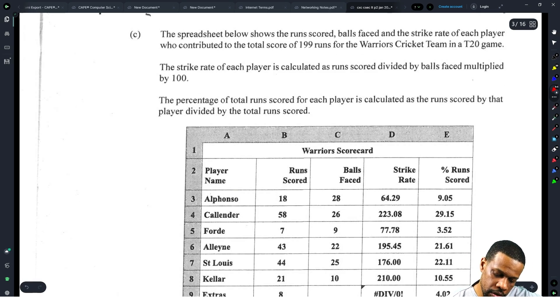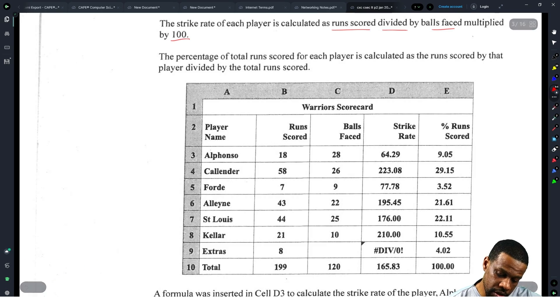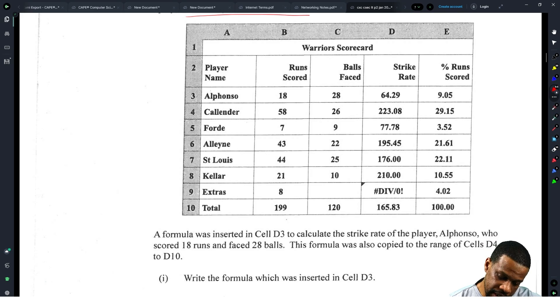Part C: The spreadsheet below shows the runs scored, balls faced, and the strike rate of each player who contributed to the total score of 199 runs for the Warriors Cricket Team in a T20 game. The strike rate of each player is calculated as runs scored divided by balls faced multiplied by 100. The percentage of total runs scored for each player is calculated as the runs scored by that player divided by the total runs scored.